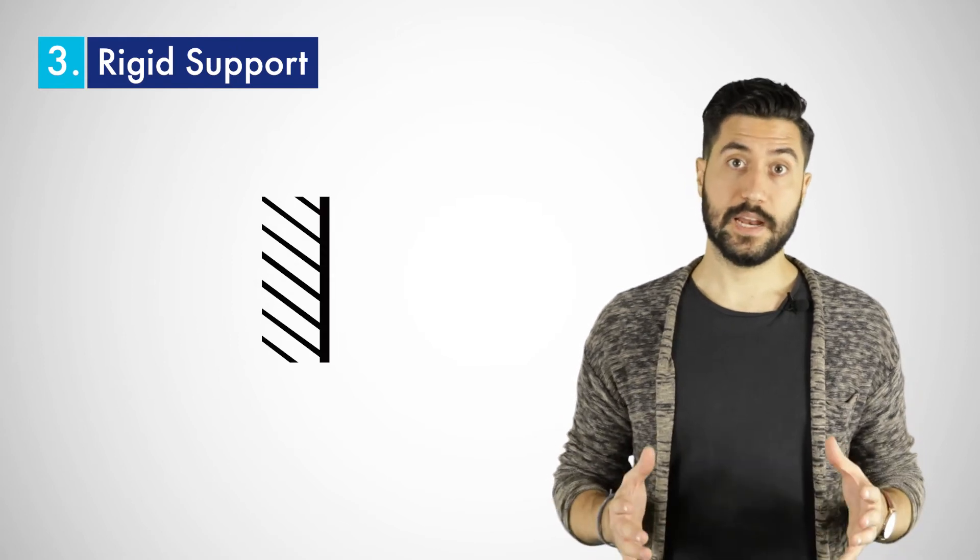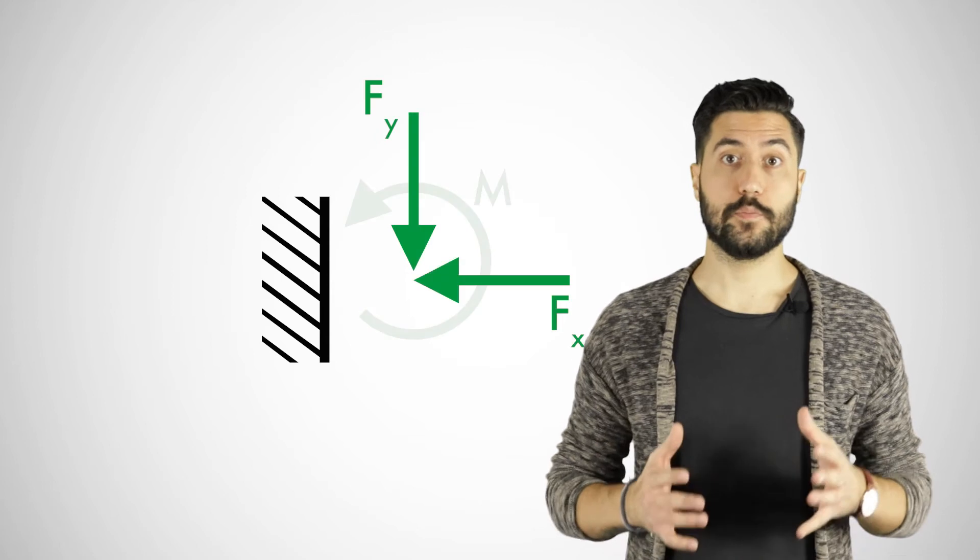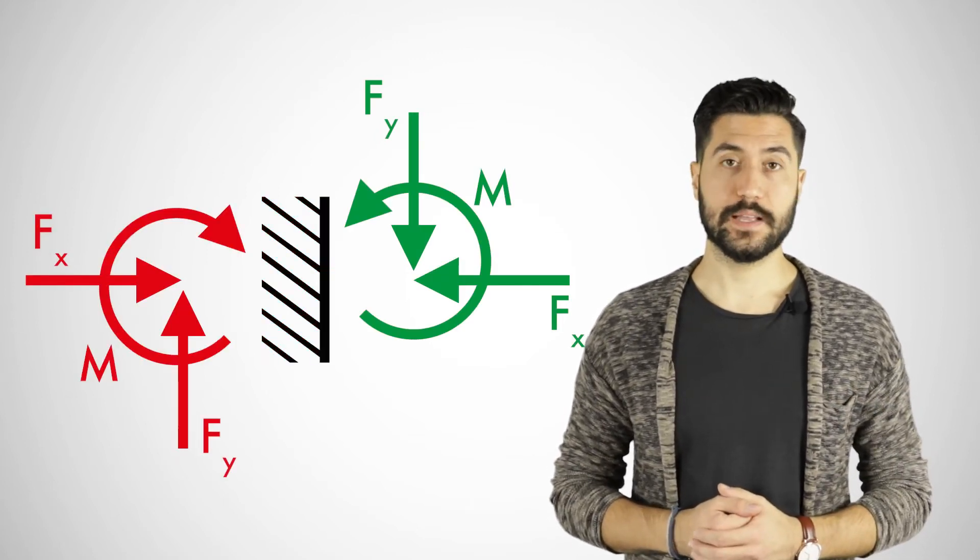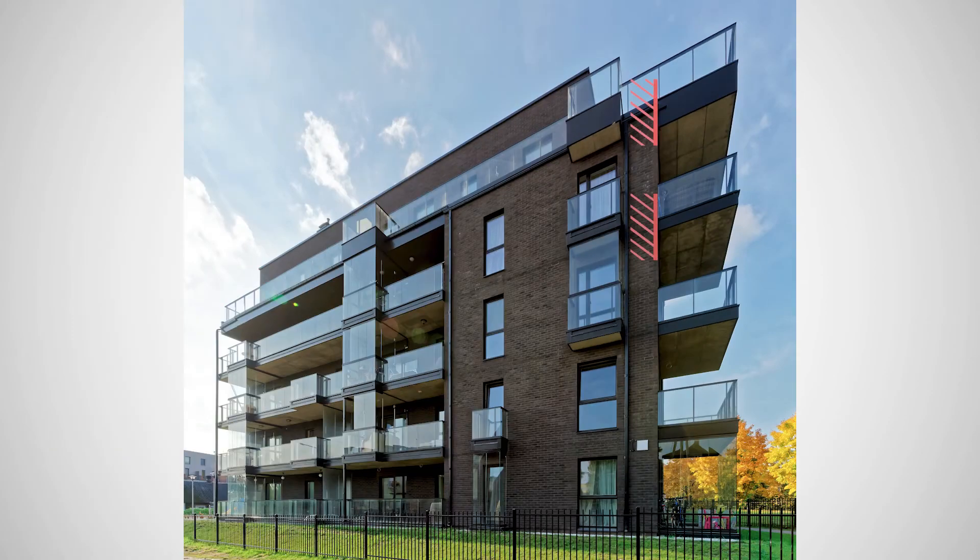And the last type is the rigid support. This type doesn't enable any displacements or rotations. This means that it can absorb moments and forces in the x and y directions and therefore provides three support forces. A classic example of a rigid support is for cantilevers such as balconies.